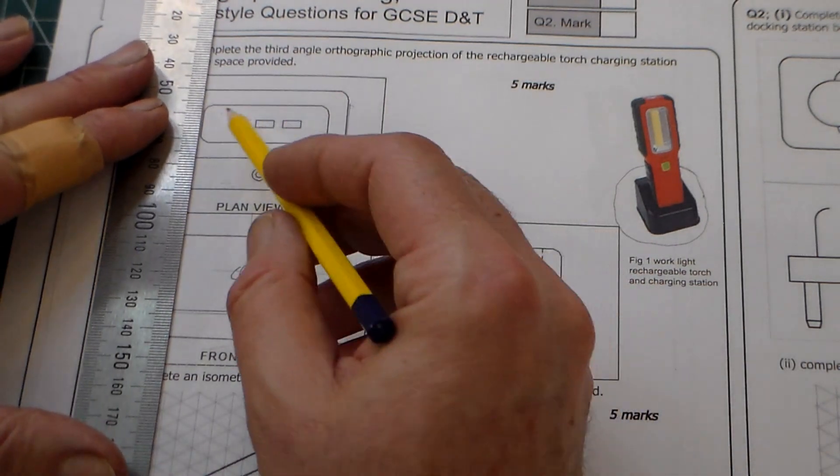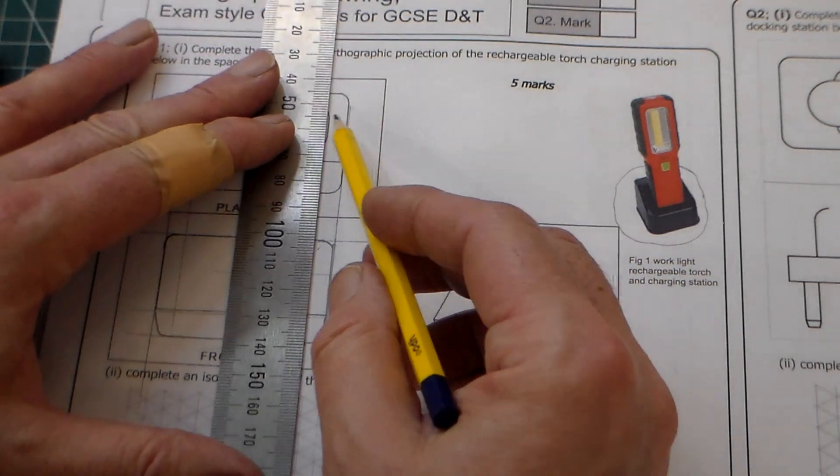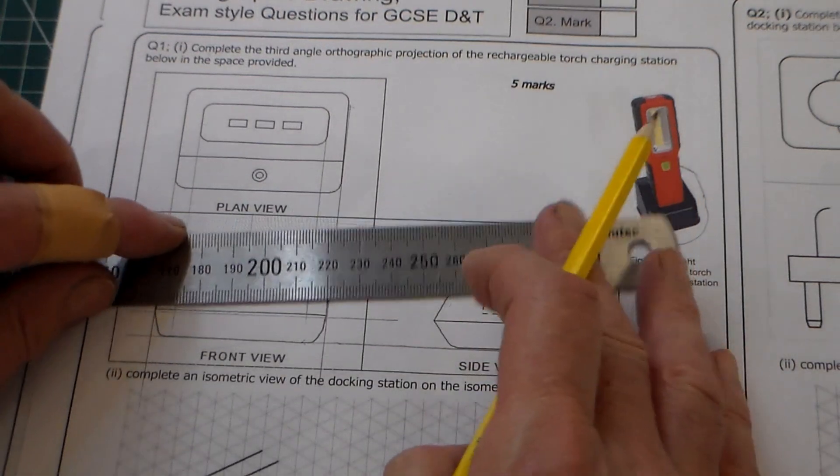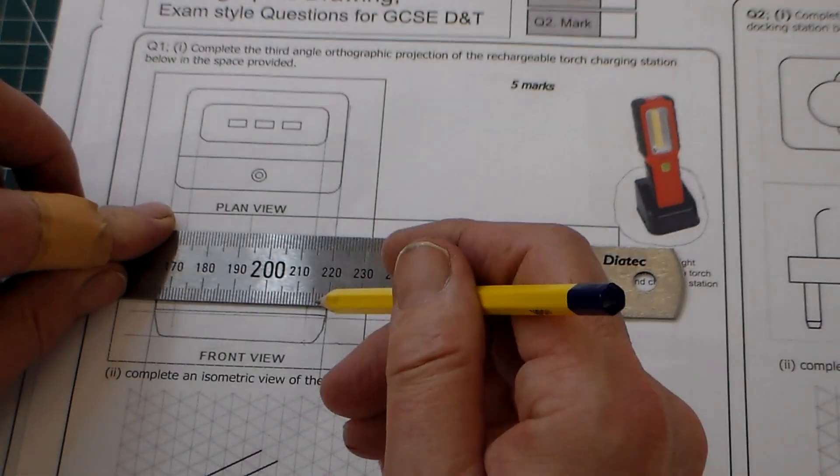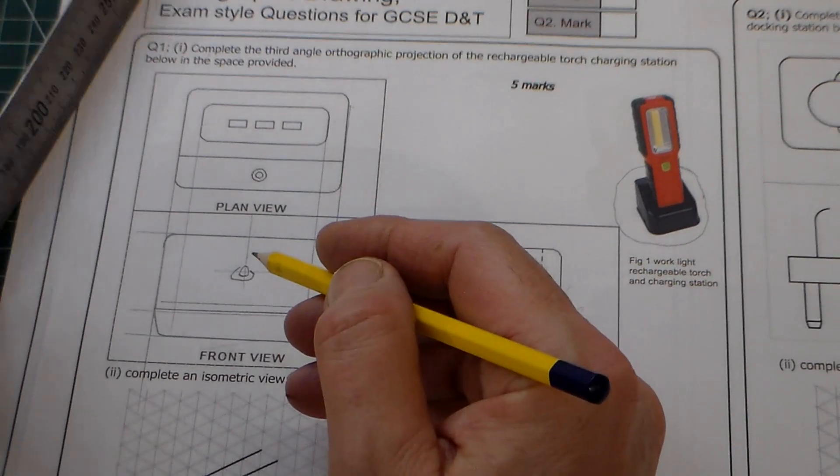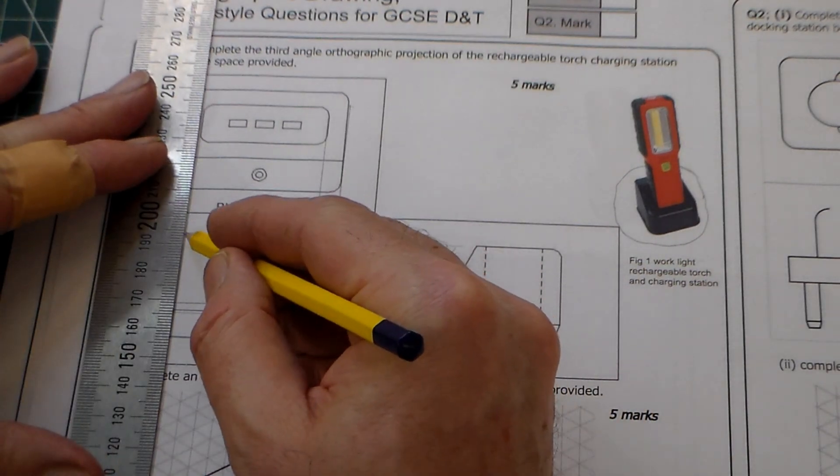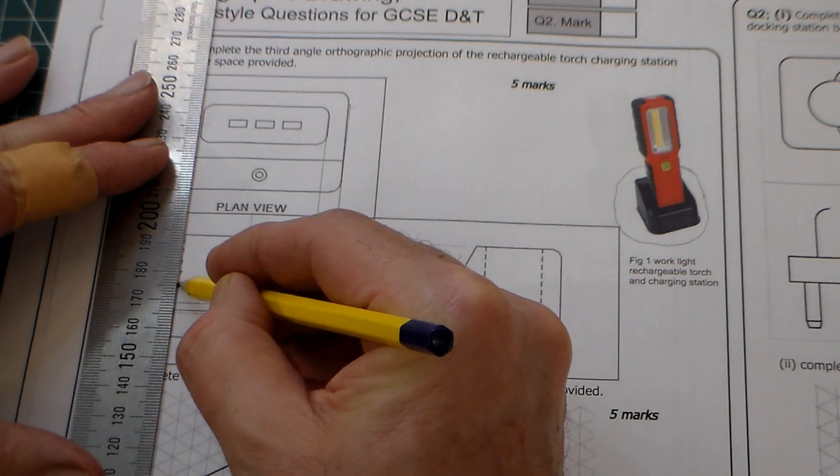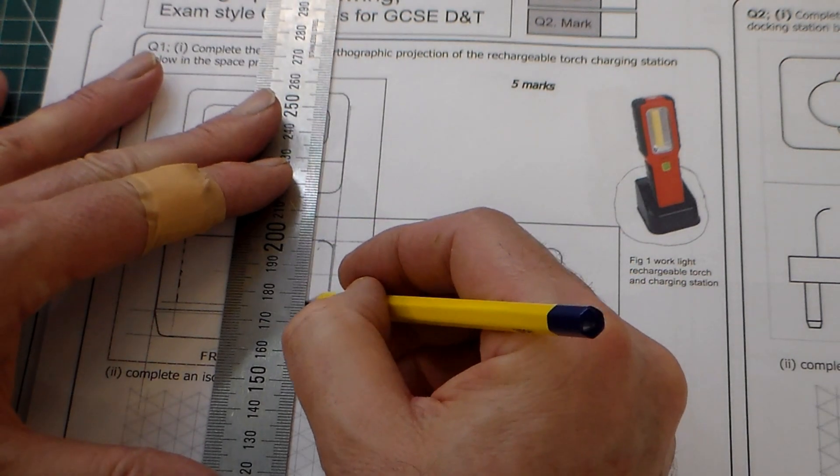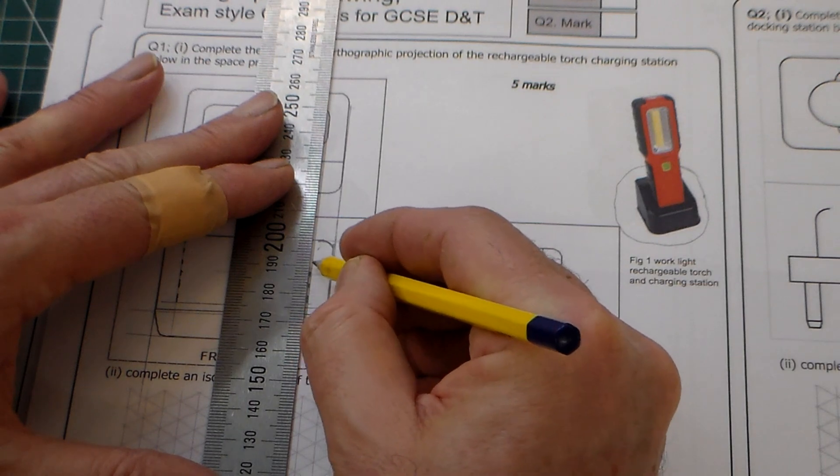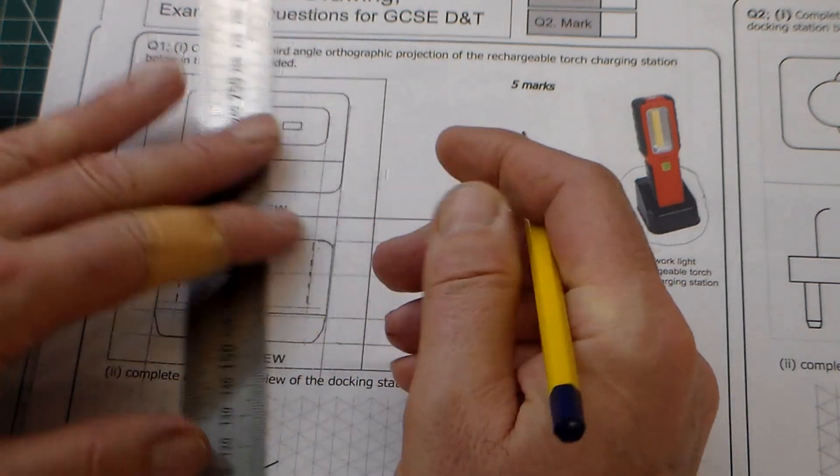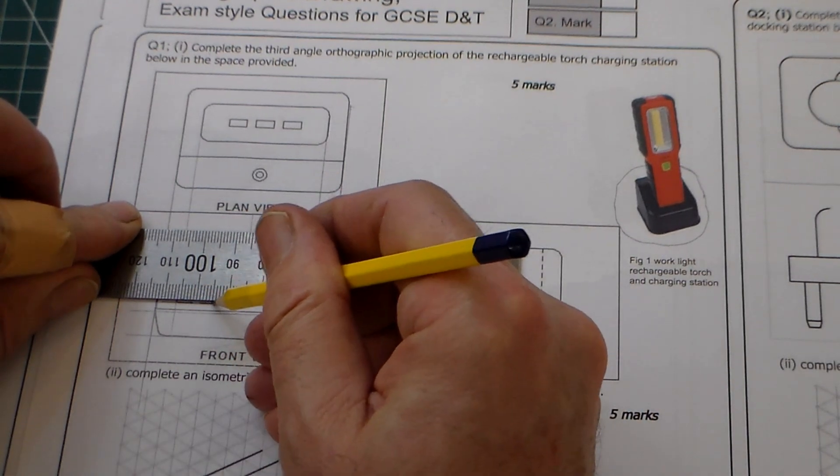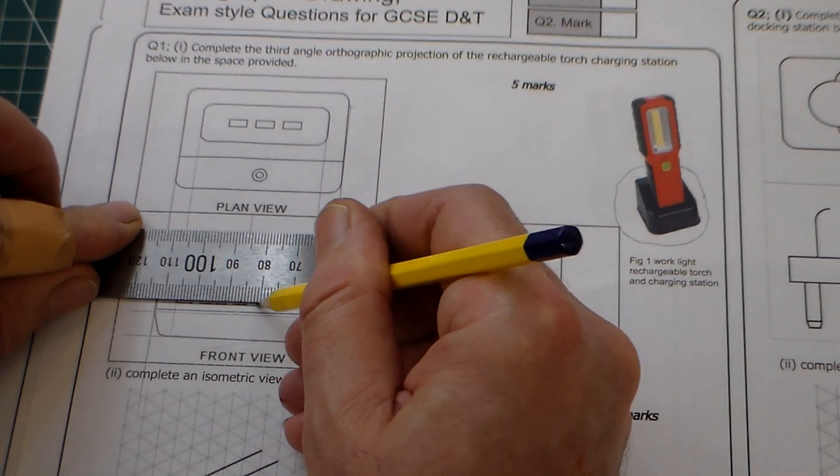So to get that hidden detail, we can project that line down there, that line there. And you can see the hidden detail is denoted by a dotted line. And then this line comes across here. And then this line, we can just put in, for our last of our five marks, we can just use the correct dotted line, use the ruler and just put a series of short dashes. And there we go.